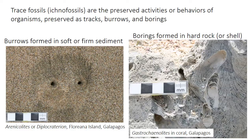Unlike shells or bones, which are the actual remains of the organism, trace fossils are more of a record of the organism's behavior. They're given scientific names, but one type of burrow could be made by several different types of animals, and one type of animal could also produce different types of trace fossils depending on its behavior.